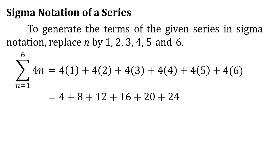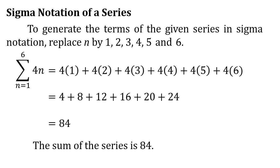That equals 4 plus 8 plus 12 plus 16 plus 20 plus 24, and the total is 84. So the sum of the series is 84.